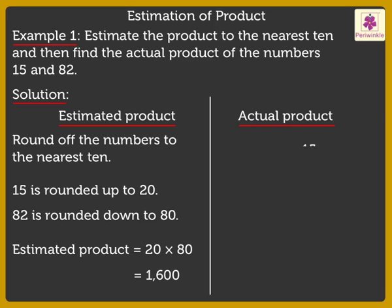To find the actual product, we multiply 15 and 82, which is equal to 1,230. Thus, the actual product is 1,230.